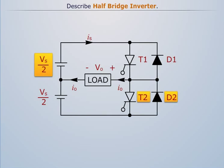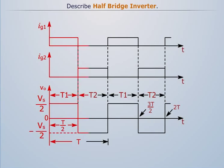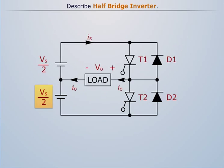Now at T equal to T by 2 to T, thyristor T2 conducts. During this time the load is subjected to a voltage minus Vs by 2 due to lower voltage source Vs by 2.